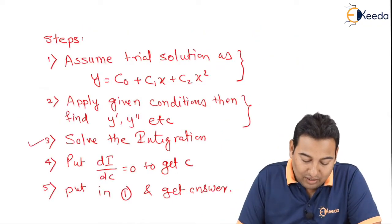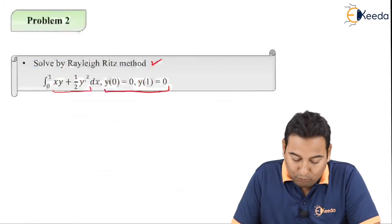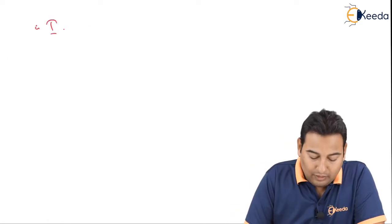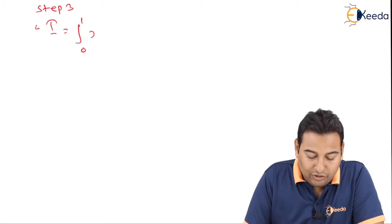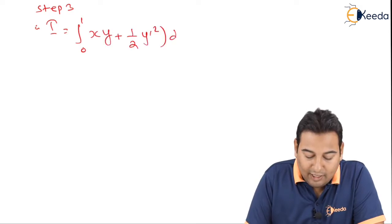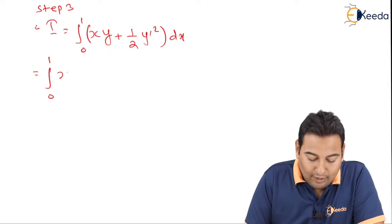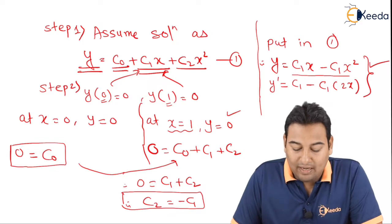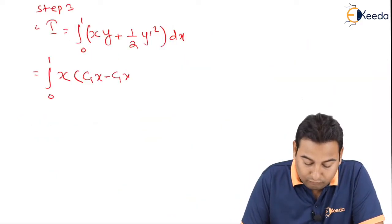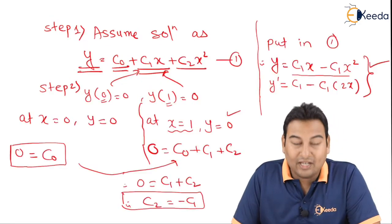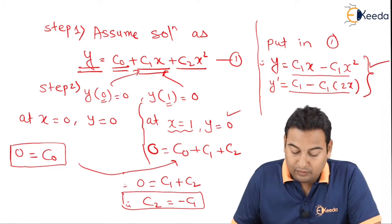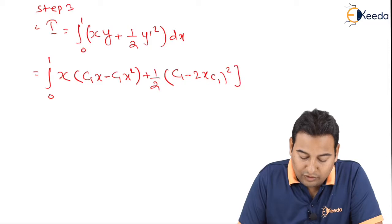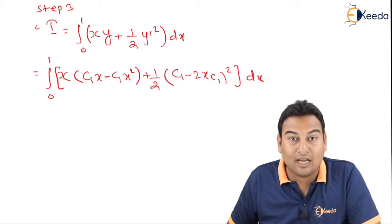Step 3: Solve the integration. We put the values into the given integral: I = ∫₀¹ [x·y + ½(y')²] dx. Substituting y = c1x − c1x² and y' = c1 − 2c1x, the integrand becomes x(c1x − c1x²) + ½(c1 − 2c1x)², which equals c1x² − c1x³ + ½(c1 − 2c1x)². We need to expand the bracket (a − b)² = a² − 2ab + b².